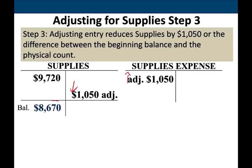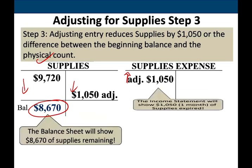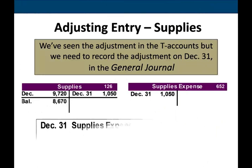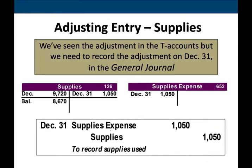After the adjustment, our supplies account shows the proper balance of $8,670 based on the physical count. What we did is properly adjust supplies — brought supplies down and brought supplies expense up. So supplies is correctly stated, not overstated, and supplies expense is correctly stated, not understated. The journal entry debits supplies expense and credits supplies. These adjusting entries are done at the end of the period — here, December 31st.